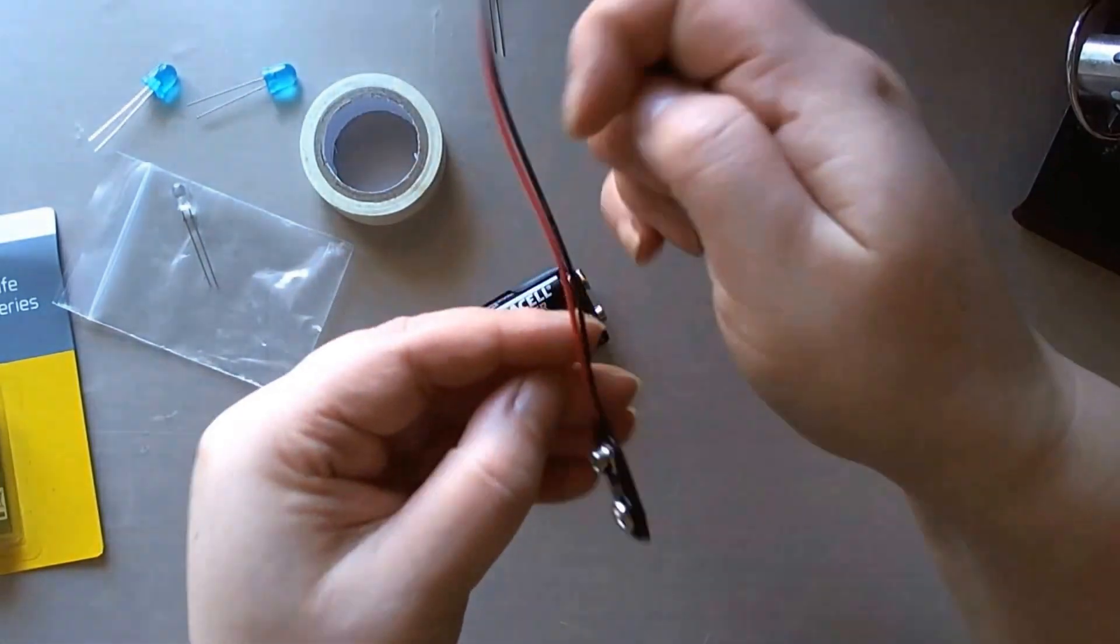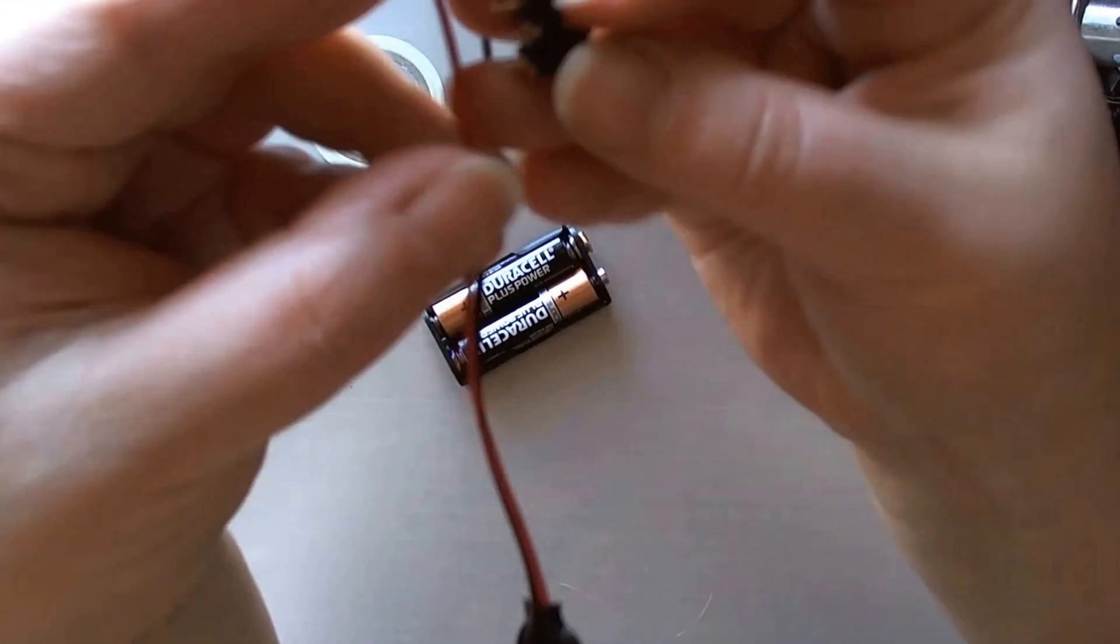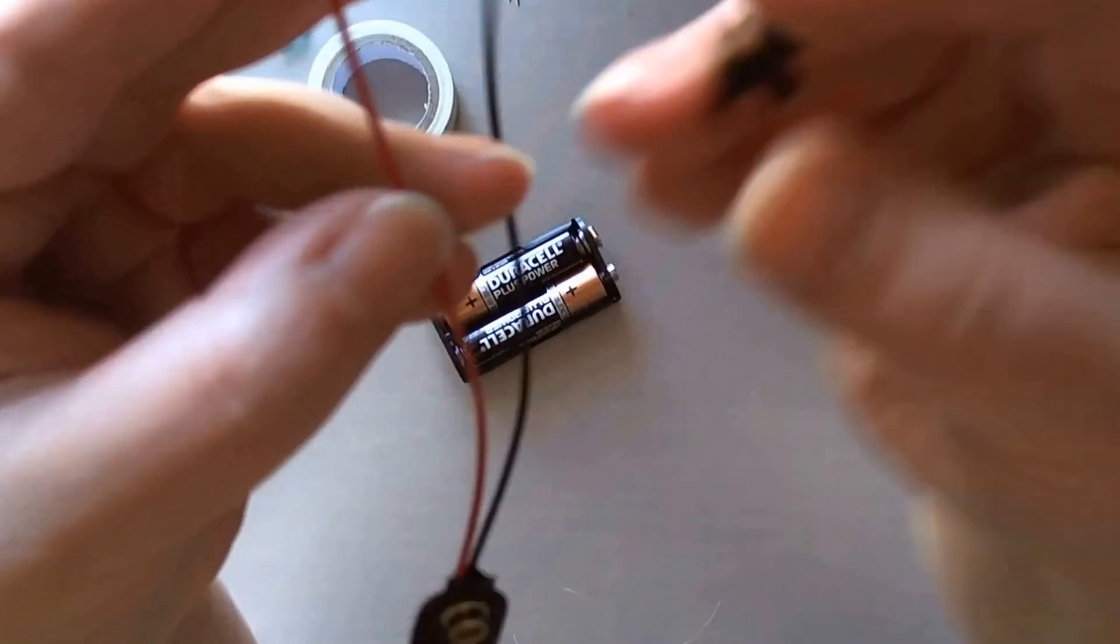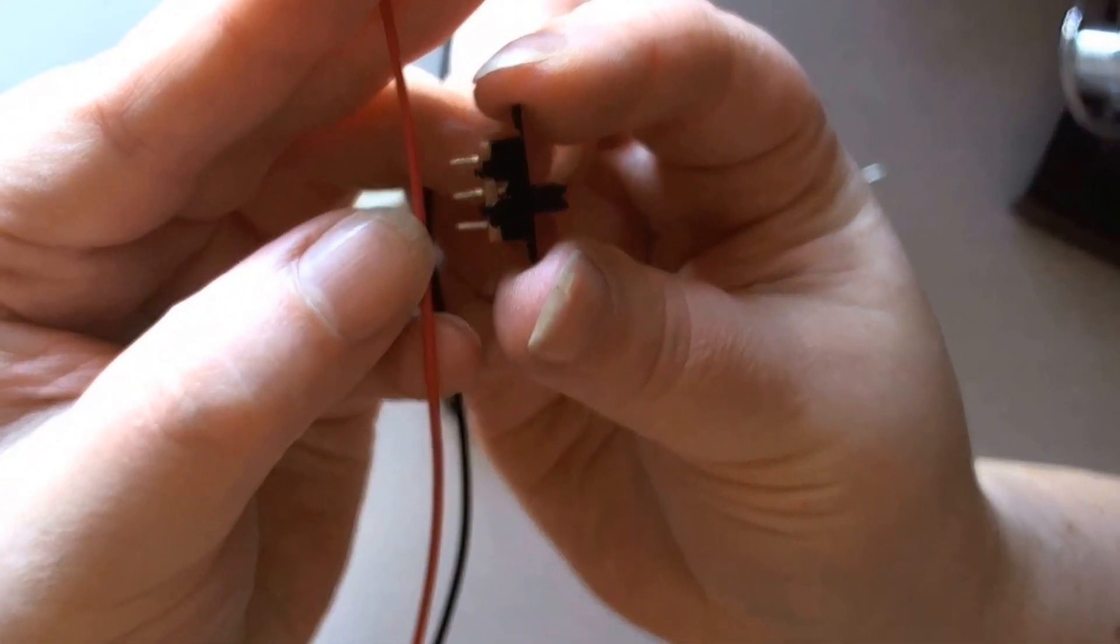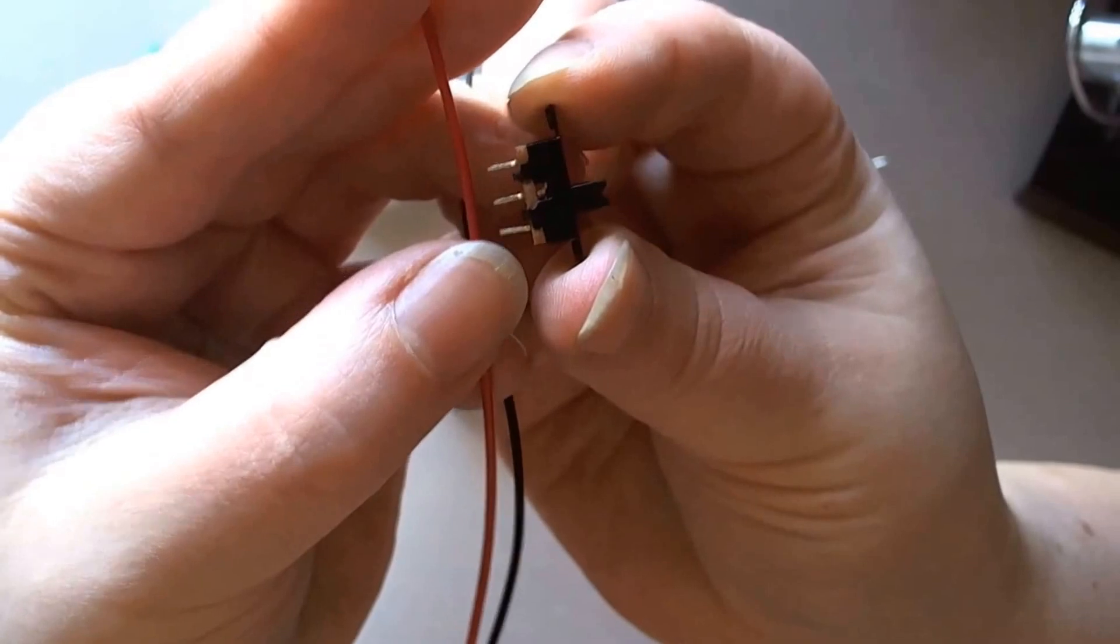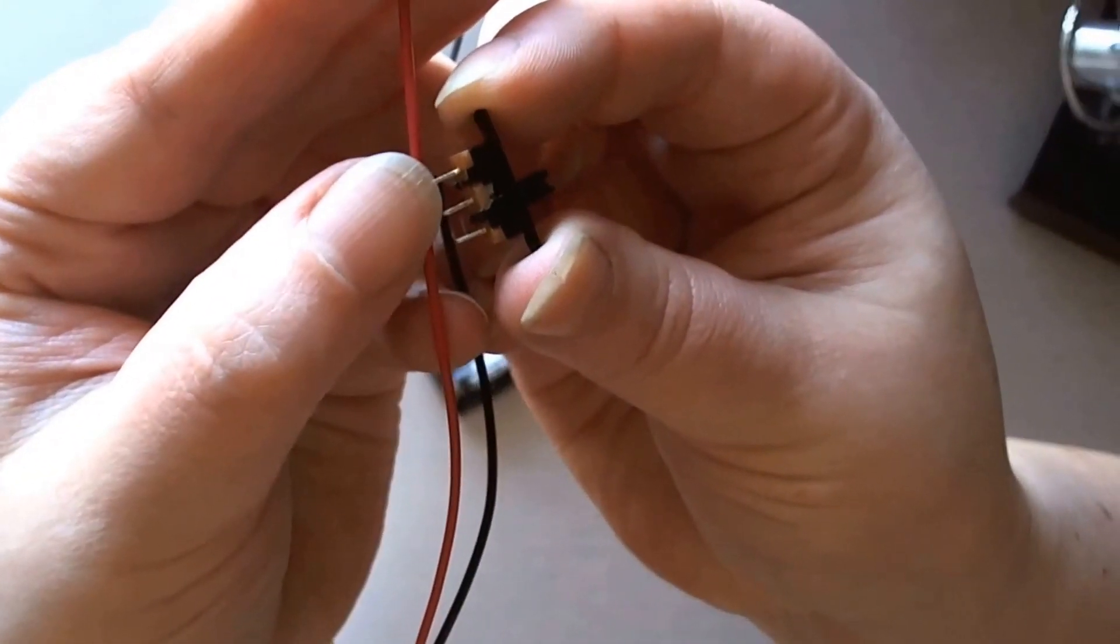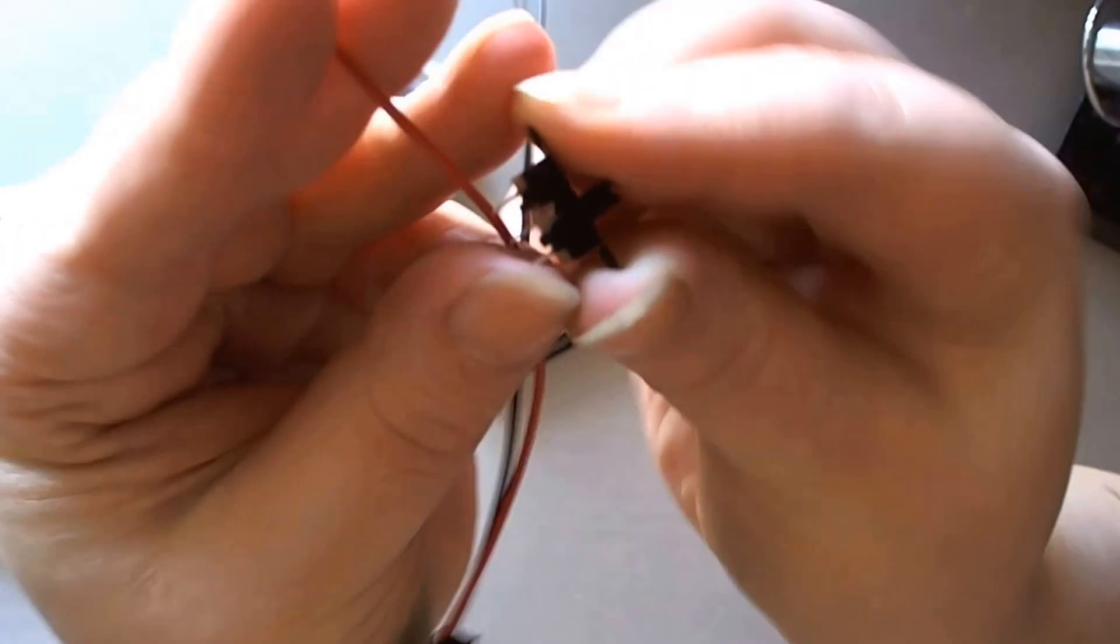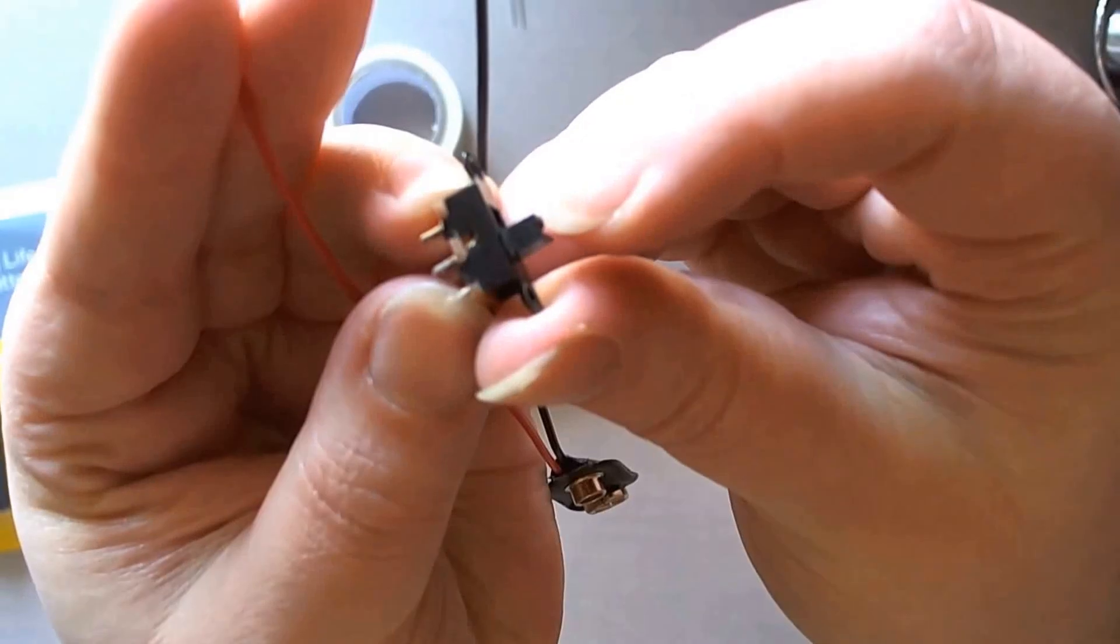If you want to put in the on-off switch rather than unplugging it every time, you would attach your on-off switch to your live wire which is the red one. You will cut it halfway down and attach one to the middle prong and one to either the bottom or the top.